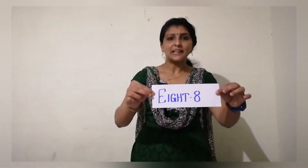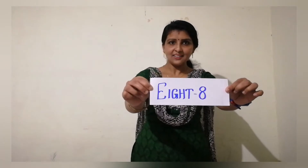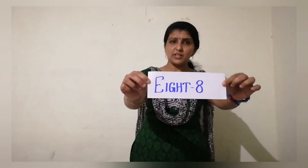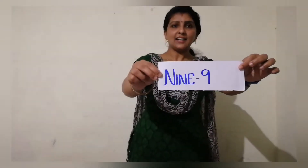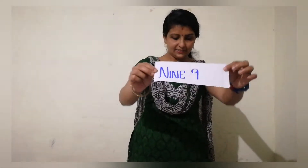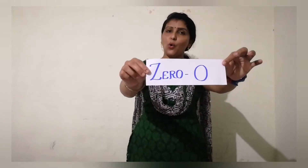What is the next number, children? 8. What is the spelling of 8? E, I, G, H, T. 8. Then 9: N, I, N, E. 9. And also we studied 0. What is the spelling of 0? Z, E, R, O. 0. These are the numbers we studied in our last classes.